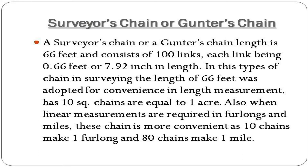Surveyor's chain or Gunter's chain: A Surveyor's chain, or Gunter's chain, is 66 feet in length and consists of 100 links, each link being 0.66 feet or 7.92 inches in length. The length of 66 feet was adopted for convenience in land measurement, as 10 square chains are equal to 1 acre. Also, when linear measurements are required in furlongs and miles, this chain is more convenient, as 10 chains make 1 furlong and 80 chains make 1 mile.